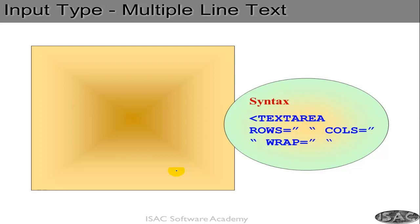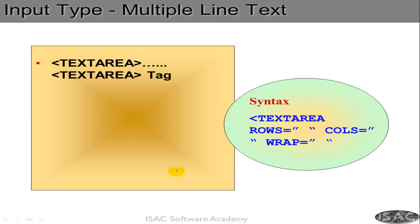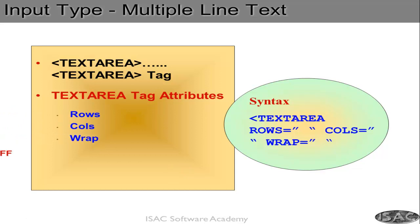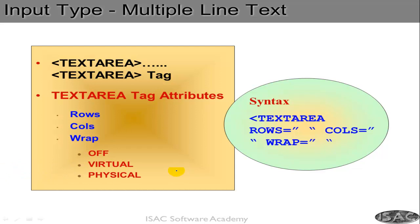Sometimes you want to enter multiple lines of text — not just one or two lines, but maybe 10 lines. For that, the tag called textarea is very important. You can say textarea spans this many rows and this many columns. You can also set the wrap attribute: if a line is very long, should it scroll left and right or should it wrap so you do not need to scroll? You can set wrap as off, virtual, or physical.